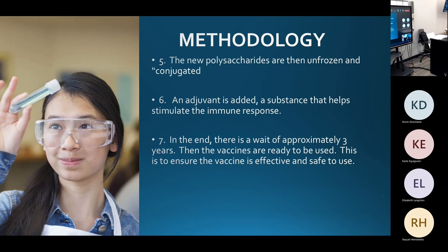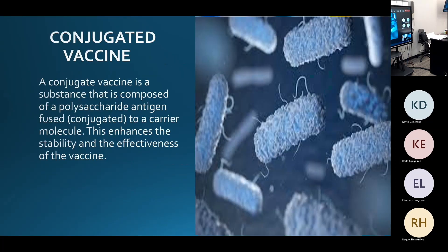These vaccines are not used right away — it takes about three years before they are used, because researchers want to make sure they are safe and effective. Now moving on to the conjugate vaccine, which is basically an add-on to the polysaccharide vaccine. It is mainly used for vulnerable populations like children and the elderly.